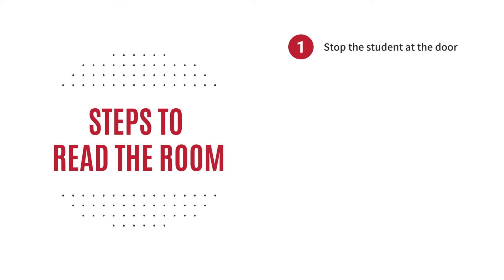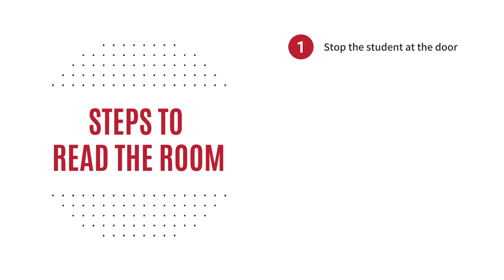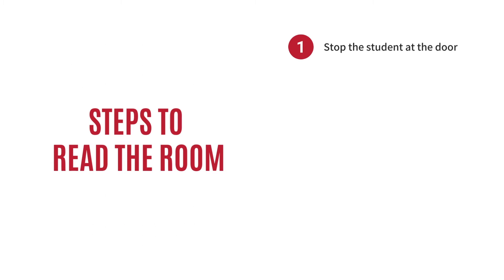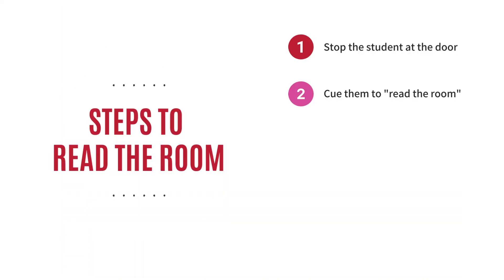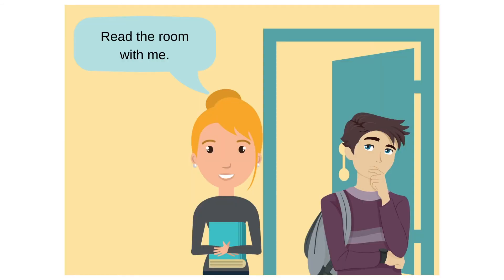Let's review the steps to teach someone like John to read the room. First, you want to stop the student at the door to the classroom. Before John enters, the teacher has him pause at the door — maybe with polite greetings: 'Good morning, John. Hey, let's talk a minute.' Now we cue the student to actually read the room. The teacher asks John to read the room with her: Is the classroom noisy? Is everyone reading silently? Are students quietly visiting? What is the room doing?